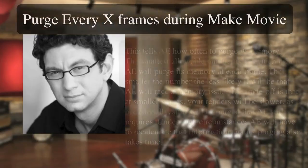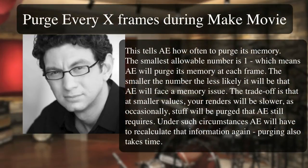'Purge Every X Frames During Make Movie' tells After Effects how often to purge its memory. The smallest allowable number is one, which means After Effects will purge its memory at each frame. The smaller the number, the less likely After Effects will face a memory issue. The trade-off is that smaller values mean slower renders, as occasionally stuff will be purged that After Effects still requires — and it will have to recalculate that information again. Remember, purging also takes time.